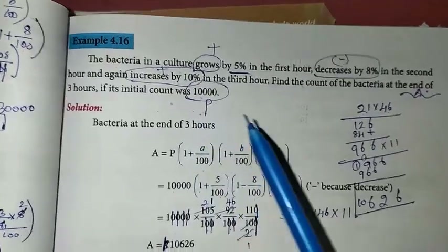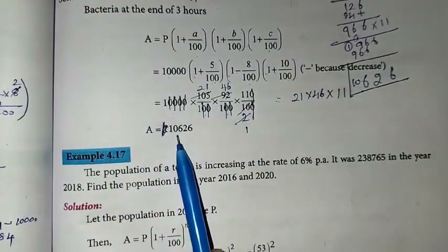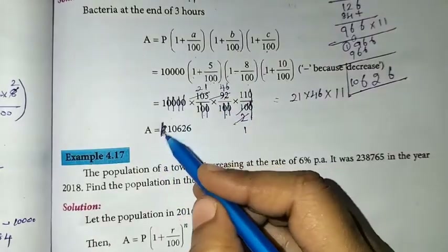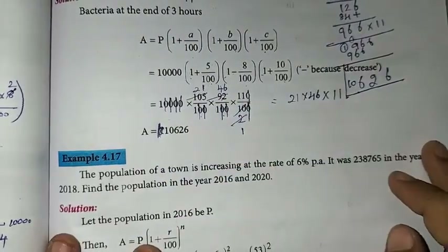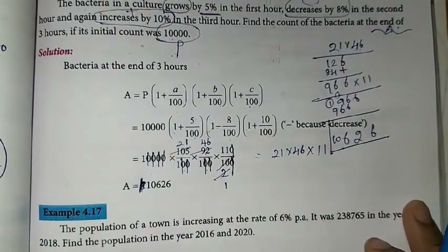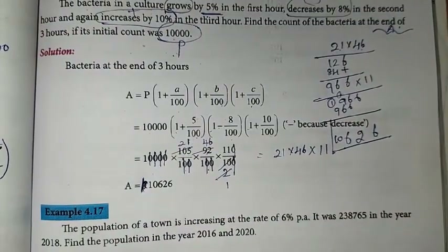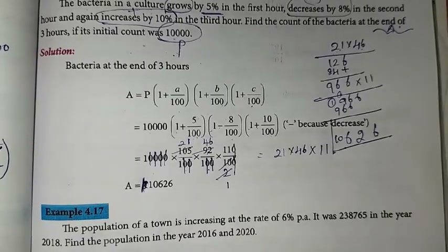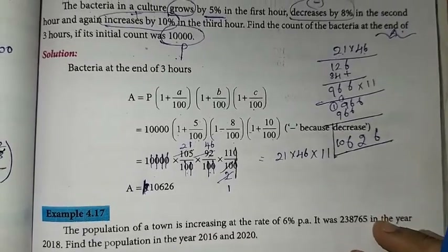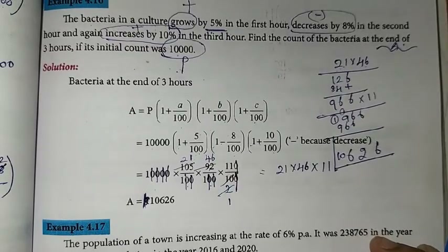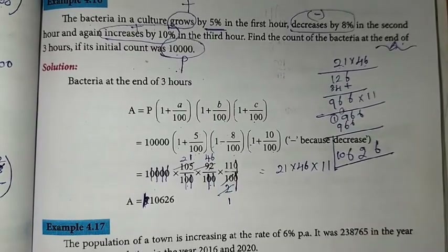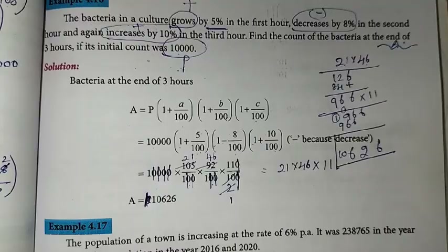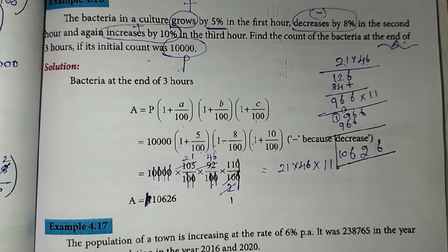So the initial count was 10,000 and at the end of 3 hours the bacteria count is 10,626. It's a very simple concept — just select the formula carefully and be careful with the signs. I hope this sum is clear and you understand it well. Thank you so much for watching, students. Bye-bye.